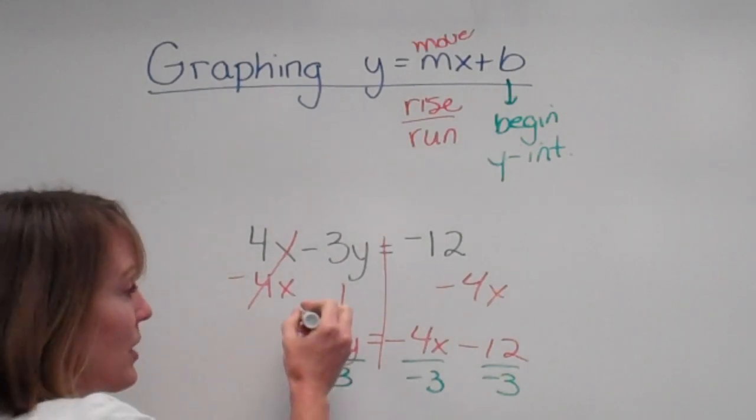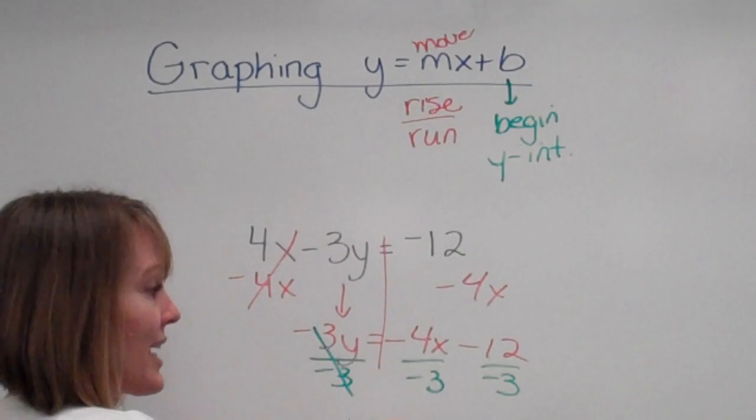Alright, so we divide by our negative 3. These cancel out. I'm left with y is alone. Yay!